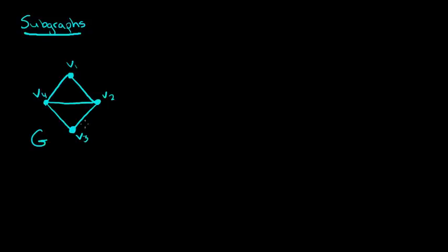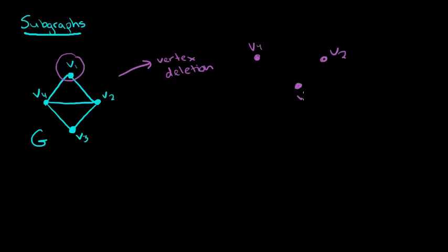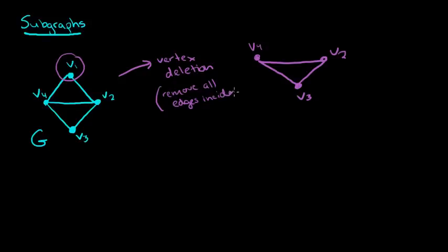One thing I could do to modify this graph and make it smaller would be to delete a vertex. So if I do something called vertex deletion, let's say I decide to delete vertex V1. Then I'm left with vertex V4, V2, and V3, and they still have the edges that go between them. But when you remove a vertex, you also have to remove the edges that are incident with V1. Otherwise, we'd have lines with no endpoint, and every edge has to have two ends.